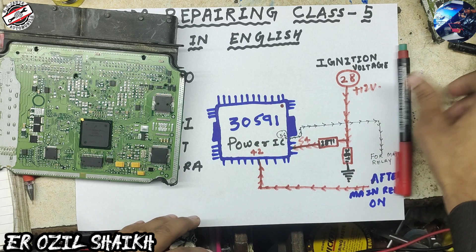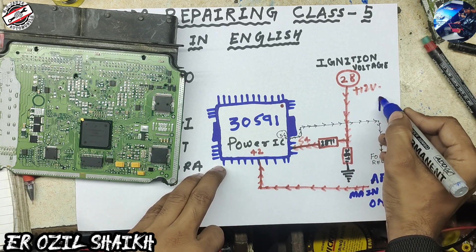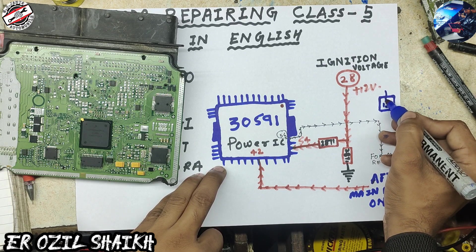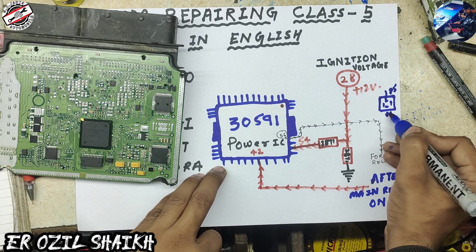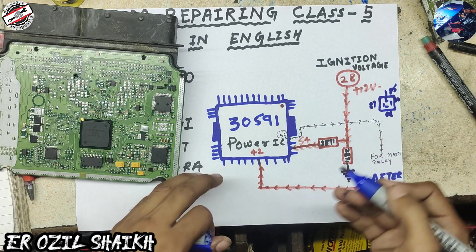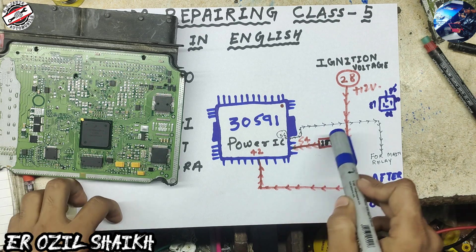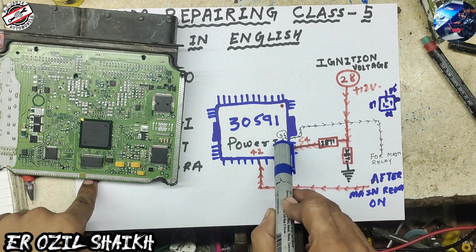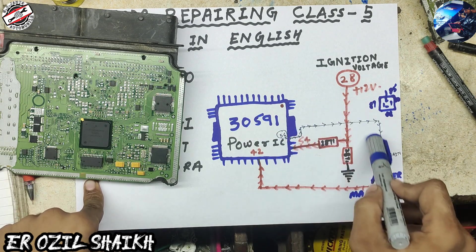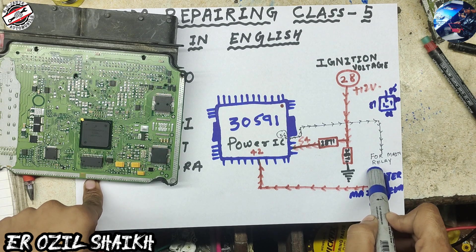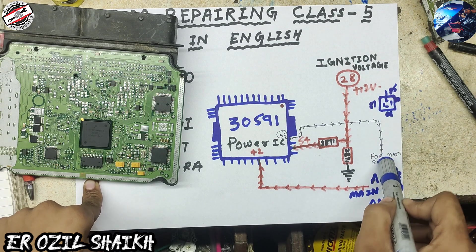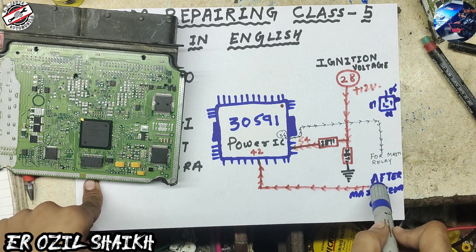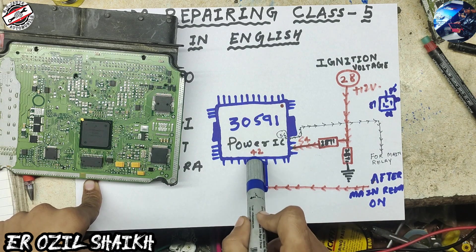You know the main relay — it has pins 85, 86, 87, and 30. When pin number 54 gets 12 volts from ignition, pin 56 produces ground and that ground goes to the main relay. When the relay gets that ground, it supplies power from the battery to IC pin number 42.